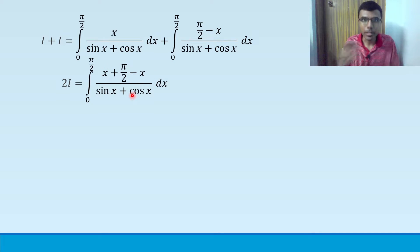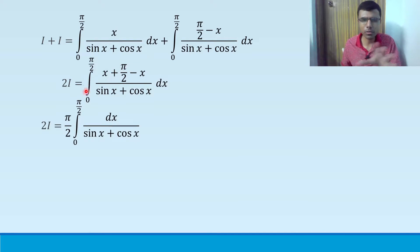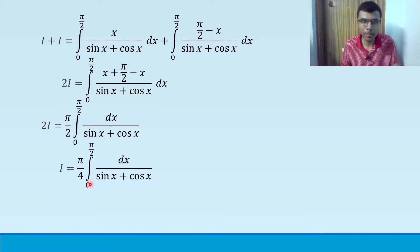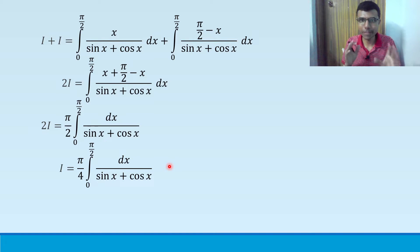The x terms cancel in the numerator — x and −x cancel — leaving just π/2. So 2I equals the integral from 0 to π/2 of (π/2)/(sin x + cos x) dx. Sending the 2 across, I = (π/4) · integral from 0 to π/2 of dx/(sin x + cos x). This was just one part of the question; some more tedious steps are coming.